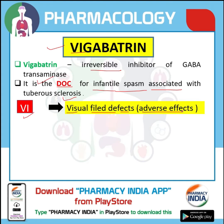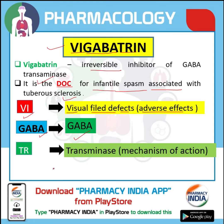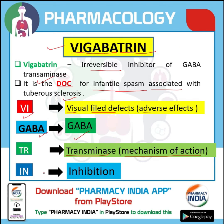Visual field defect is its adverse effect. 'GABA' denotes GABA, and 'TR' denotes transaminase, which is related to its mechanism of action. 'IN' denotes inhibition — so it means VIGABATRIN inhibits GABA transaminase.